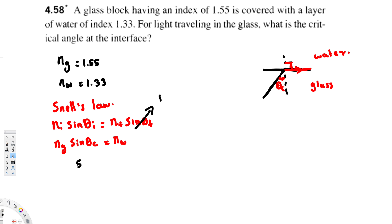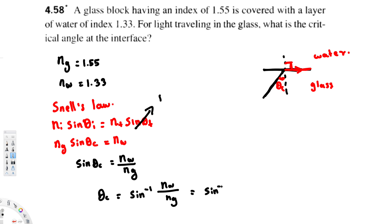Solving for theta c: sin(θc) = nw / ng, so θc = sin⁻¹(nw / ng) = sin⁻¹(1.33 / 1.55). Calculating this gives 59 degrees. That is the critical angle required for the transmitted ray to reach 90 degrees at the glass-water interface.